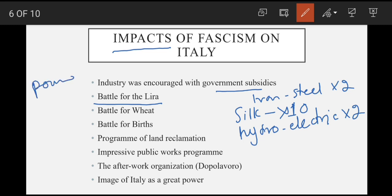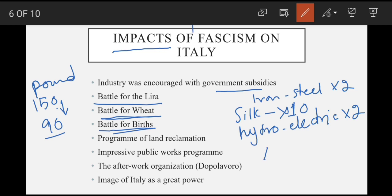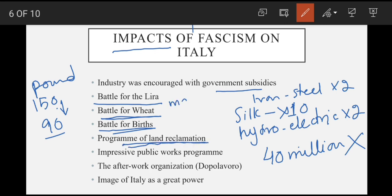Then to encourage farmers to focus on wheat production, he started the 'Battle for Wheat.' Is ke ilawa ek aur campaign 'Battle of Births' bhi launch kiya jis ka maqsad birth rate ko barhaana tha, kyunki Mussolini ko lagta tha ke ek azeem state banne ke liye 40 million ki population bahut kam thi. Then he started a program of land reclamation jis mein marshes ko drain karna, irrigation, aur pahadi ilaqon mein forest lagana shamil tha.